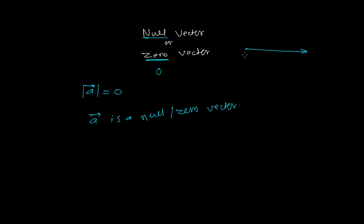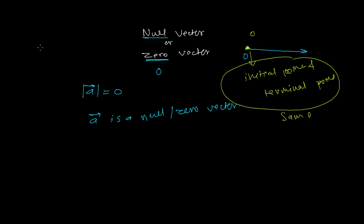In one dimension, if this is my x-axis and this is the origin, then I'm moving zero units — zero meters, zero kilometers — I'm not moving at all, I'm at the same point. So the zero vector is a vector whose initial point and terminal point are the same. In a normal vector you have a distinct initial point and terminal point connected, but here they merge into one — you're moving zero distance.